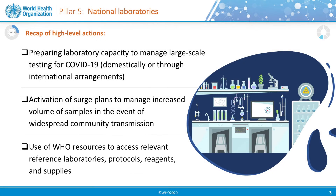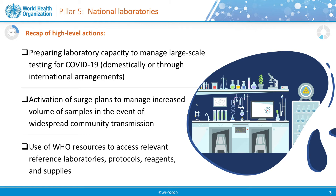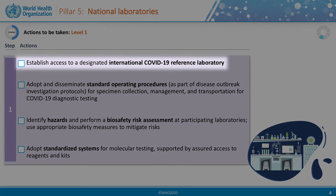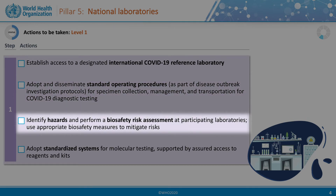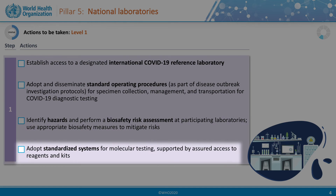Let's now detail each of these three actions at the levels of prioritization. In the first level, we advise countries to establish access to a designated international COVID-19 referral laboratory appointed by WHO. Countries will need to adopt and disseminate standard operating procedures as part of disease outbreak investigation protocols for specimen collection, management, and transportation for COVID-19 diagnostic testing. It is critical that laboratory experts identify hazards and perform a biosafety risk assessment at participating laboratories — please refer to WHO biosafety guidelines specific for COVID-19. In parallel, we advise all countries to adopt standardized systems for molecular testing, supported by assured access to reagents and kits. WHO can give advice in this regard.